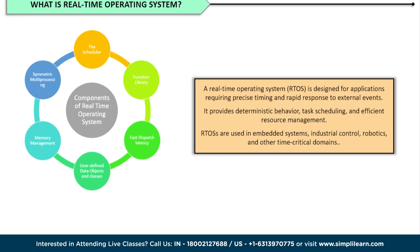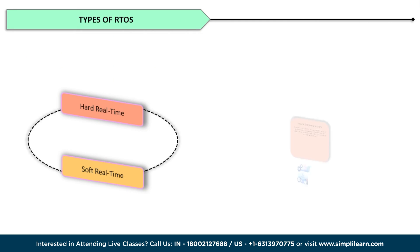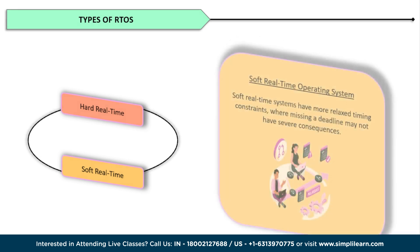There are two types of real-time operating systems: hard real-time and soft real-time. In a hard real-time system, missing a deadline can lead to catastrophic consequences, and these systems are designed to guarantee critical tasks are completed within their deadlines. Soft real-time systems have more relaxed timing constraints, where missing a deadline may not have severe consequences.